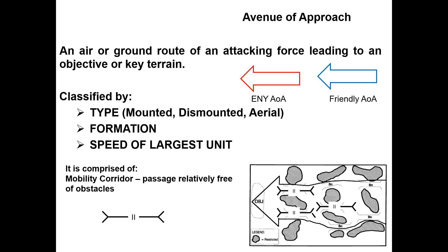Avenues of approach are composed of mobility corridors, which are passageways that are relatively free of obstacles. On the symbol for a mobility corridor, the two lines in the middle are a unit size designator — that's a battalion, just like on top of our unit icons. A platoon-size mobility corridor would have three dots, a company would be a single line, and a squad would be a single dot. That part of the symbol tells you how large the corridor is and what size unit can easily move through it. A series of mobility corridors can be put together to create an avenue of approach for your total unit to reach the objective.